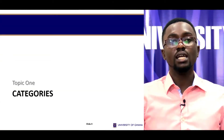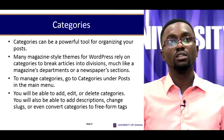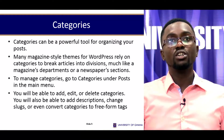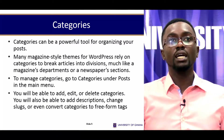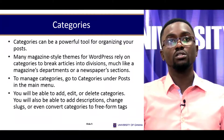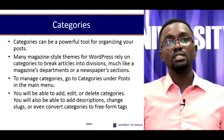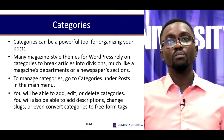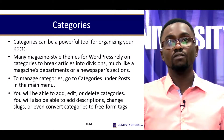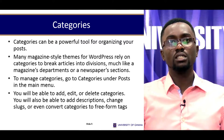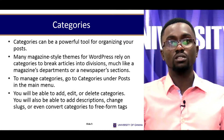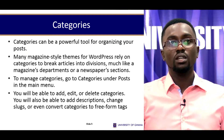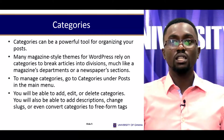Let's start off with categories. Categories can be a powerful tool for organizing posts. Many magazine-style themes for WordPress rely on categories to break articles into divisions, much like a magazine's departments or a newspaper's sections. To manage categories, go to Categories under Posts in the main menu.